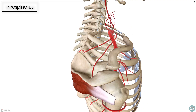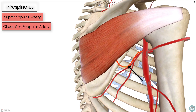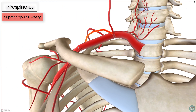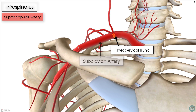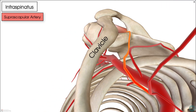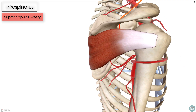The infraspinatus receives its blood supply from two arteries: the suprascapular artery and the circumflex scapular artery. The suprascapular artery begins from the thyrocervical trunk, which comes off the subclavian artery — or more specifically, it is the first branch of the thyrocervical trunk. From its origin, the suprascapular artery runs laterally and parallel with the clavicle, then descends onto the suprascapular notch to move down to the infraspinous fossa, where it supplies the infraspinatus muscle.